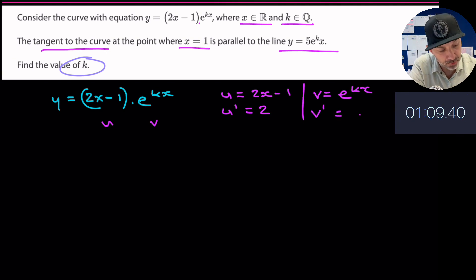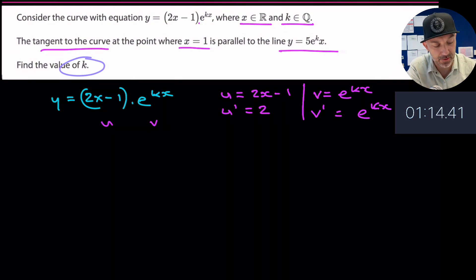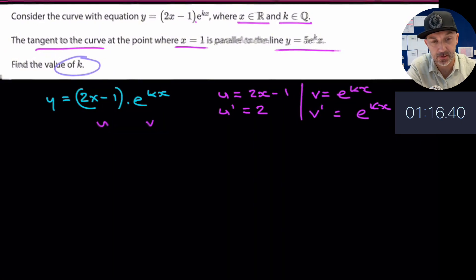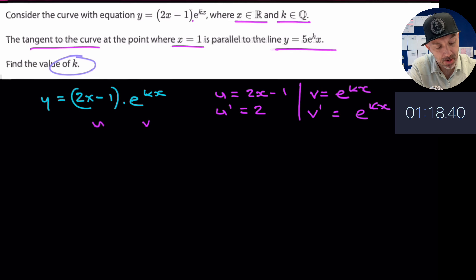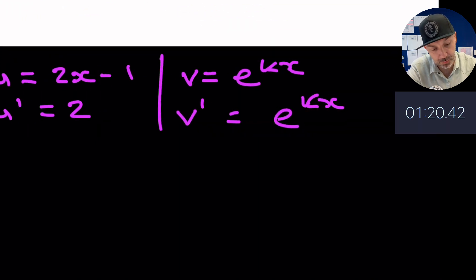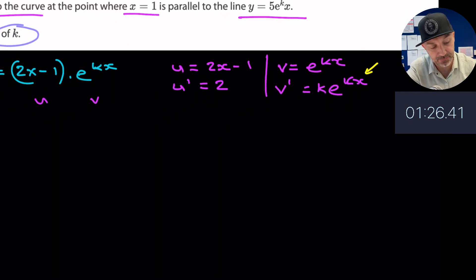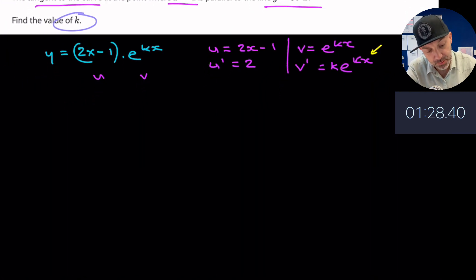v is e to the kx. Now when we differentiate v with respect to x, we would keep e to the kx - this is part of another course, another topic when we differentiate the expression e. But now we have to multiply through by the derivative of the power. The derivative of that power would just be k. That's very important here in this question.